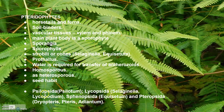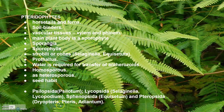Pteridophytes are further classified into four classes: Psilopsida (example: Psilotum), Lycopsida (Selaginella, Lycopodium), Sphenopsida (Equisetum), and Pteropsida (Dryopteris, Pteris and Adiantum).